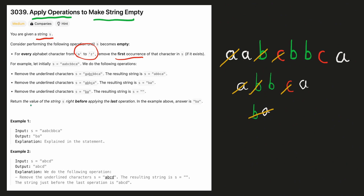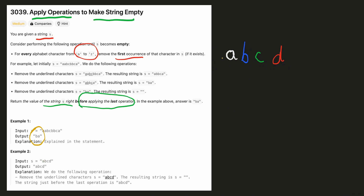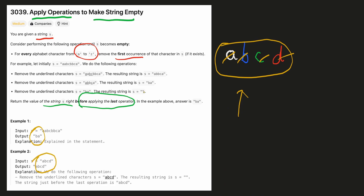It is given in this question that we have to return the value of the string just before applying the last operation when our string becomes empty. So in this case the value of the string before becoming empty was 'ba', so we return 'ba'. In our second example, when we apply the operation the first time, the first occurrence of a, b, c, and d are deleted and the string becomes empty, so the answer is 'abcd'.